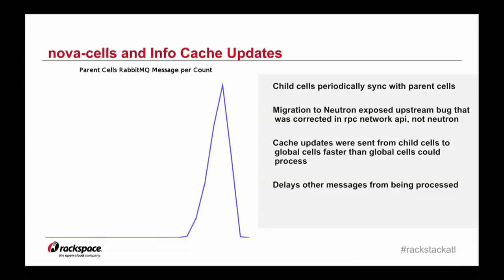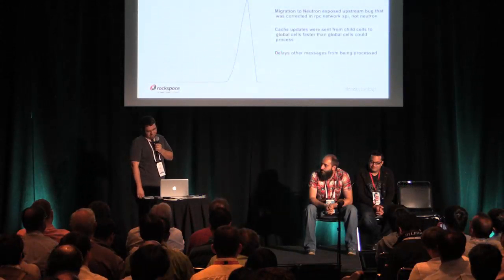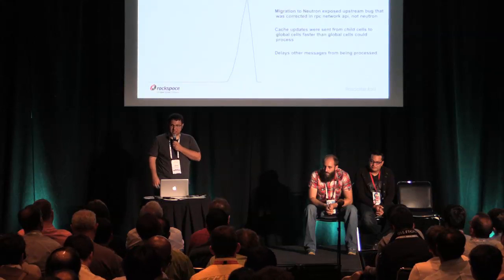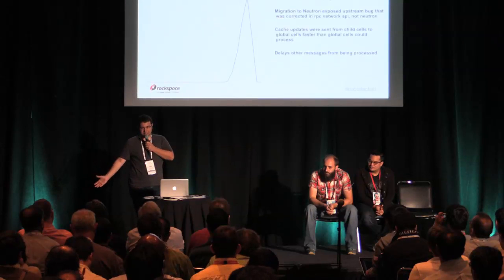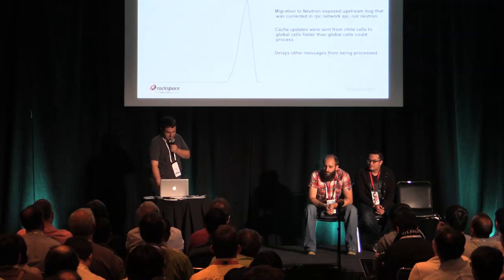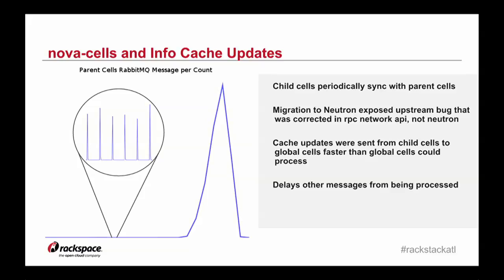Speaking of cache updates, there are some issues around that with Nova Cells. This is a graph of our global cells workers RabbitMQ after that deployment. Messages were coming into that queue faster than they could be consumed, causing all kinds of chaos — builds were getting stuck, they would be building but never go active because that required the message to go back up to the global queue. Our normal fluctuation wouldn't even show up on this graph; this was exponentially larger in message volume. We found this during a deployment and sent a patch upstream, and we've since disabled the healing of infocache updates anyway.